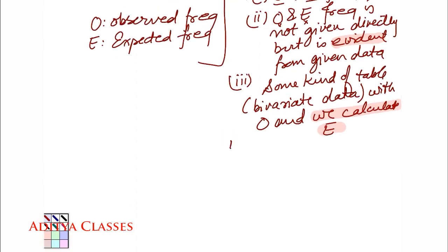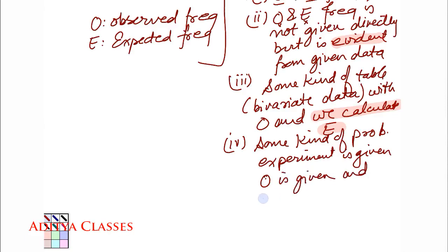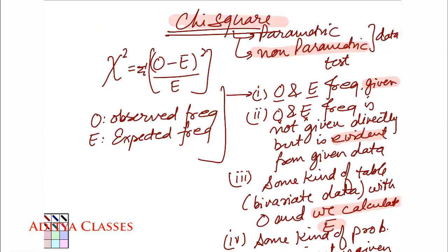And last case that could happen over here is that some kind of probability experiment is given. And we are expected to find, some kind of probability experiment is given, O is given and E is to be calculated. So these are the four kinds of questions that we may come across when we are studying chi-square test for non-parametric data.